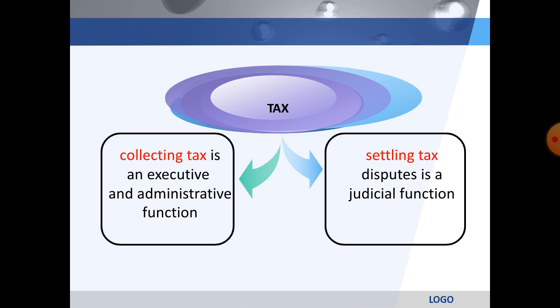The separation of powers may require, depending on interpretation, that the membership of the three powers must be separate, that one of the three powers does not control the work of another, or that one organ of government should not exercise the powers of another. Keeping all three roles separate is seen as both theoretically and practically impossible.